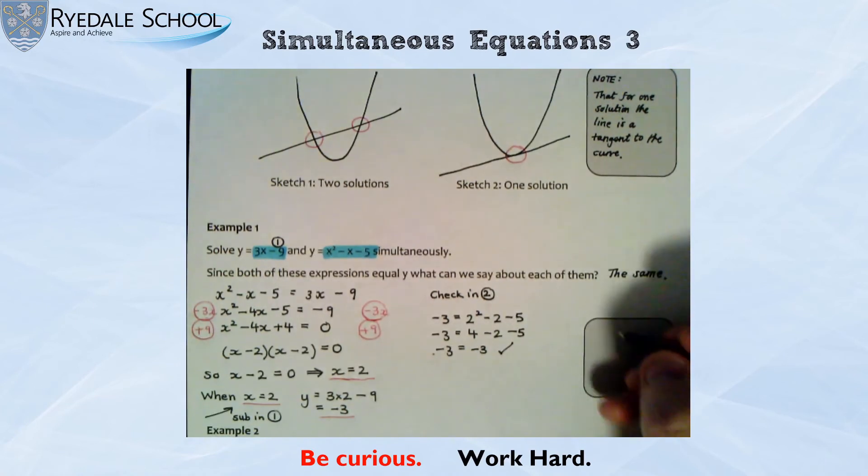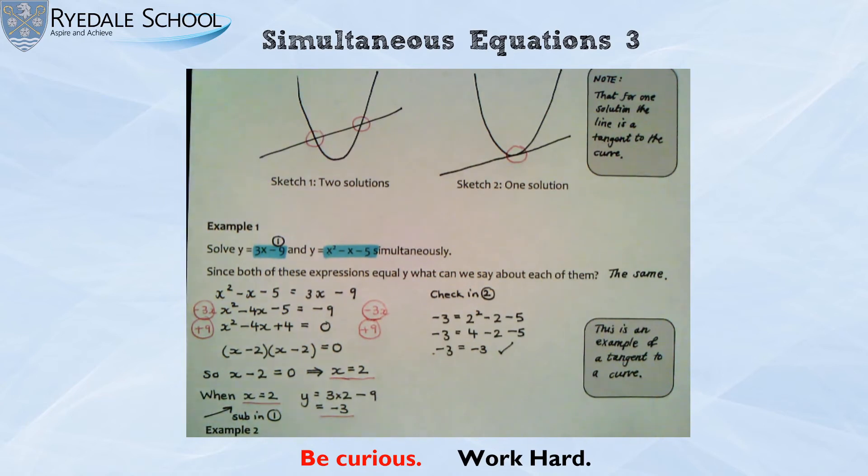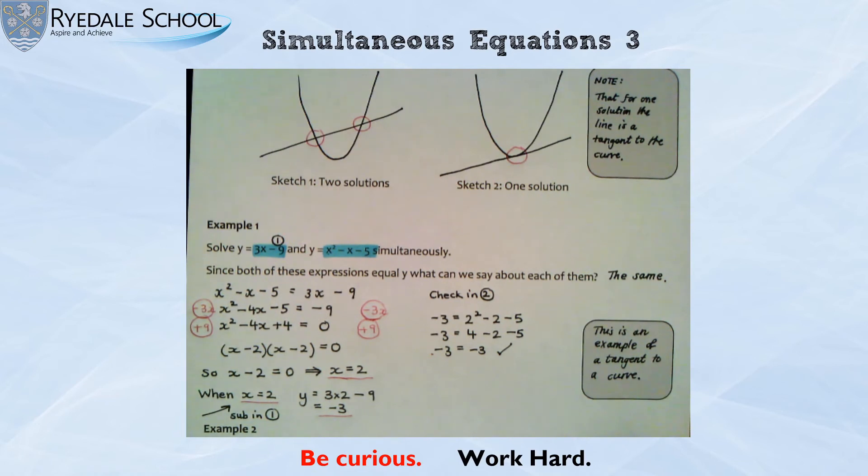So this box is just to say, this is an example of a tangent to a curve. And I know that that happened because I only ended up with one solution. I've got what's called a repeated root. Okay, so that's the first example.